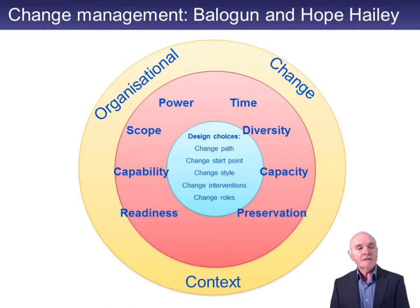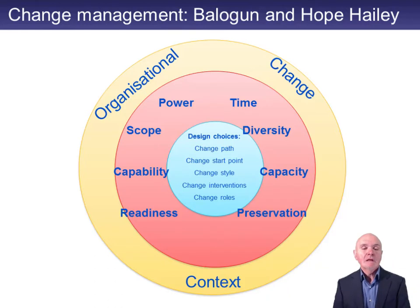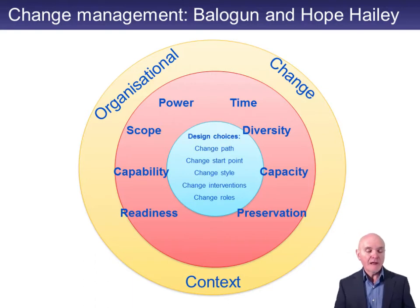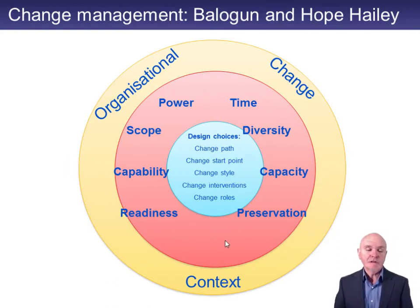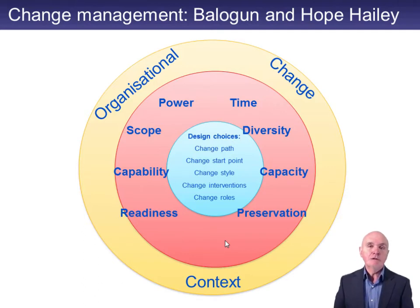The first theory we have here is Balogun and Hope Hailey — they call it their kaleidoscope of change. What they're trying to say is that around the outside, in pink, is what they call the context of change — the variables relating to change — and then inside, in the very centre in blue, are what they call the design choices.